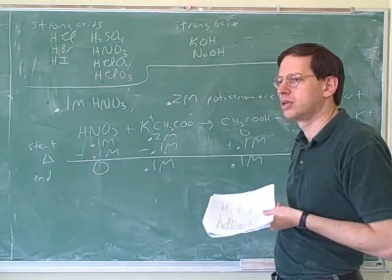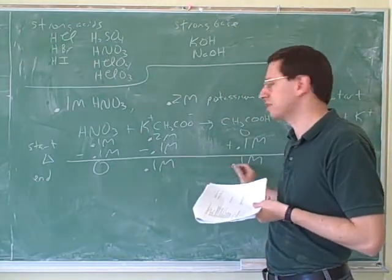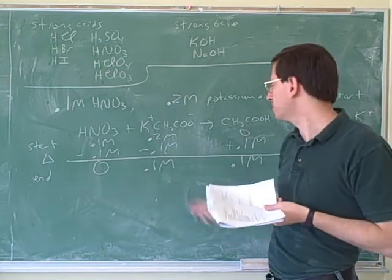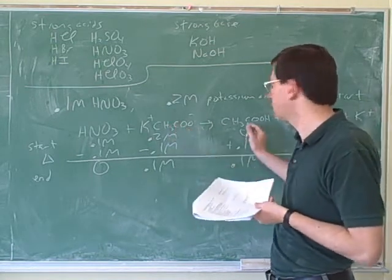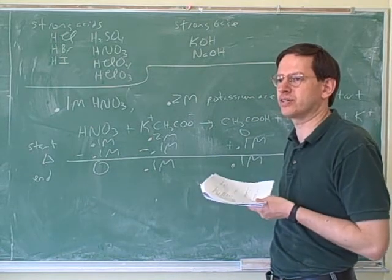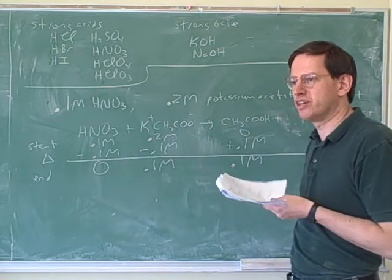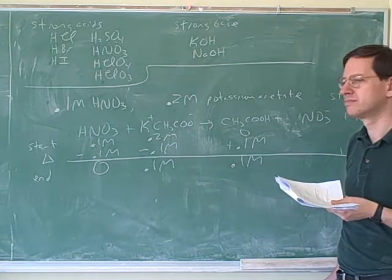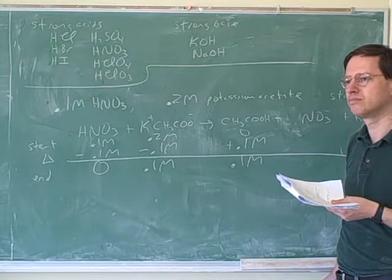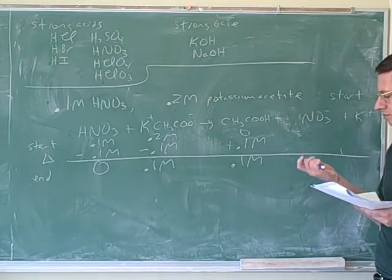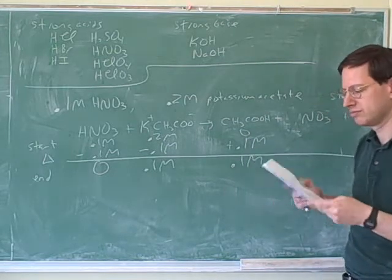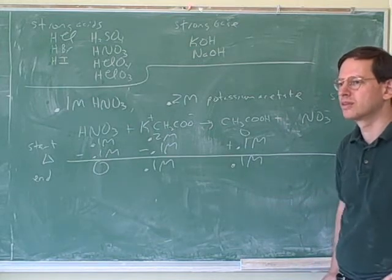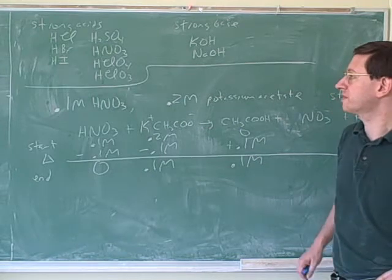So what would be our final concentrations? 0.1 and 0.1. Now, is this a good buffer solution? How do you know? Well, in the same way we figured out before, we have 0.1 molar of acetate and 0.1 molar of acetic acid. Is that a good buffer solution? What is a good buffer solution? That's equal amounts of a strong base. Is that a strong base? Is potassium acetate strong? I guess we should have clarified that.